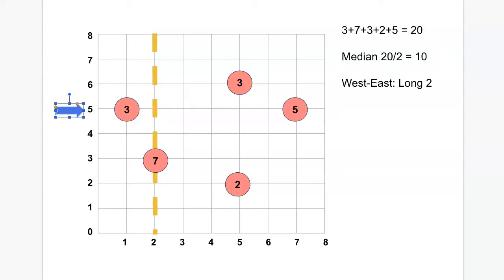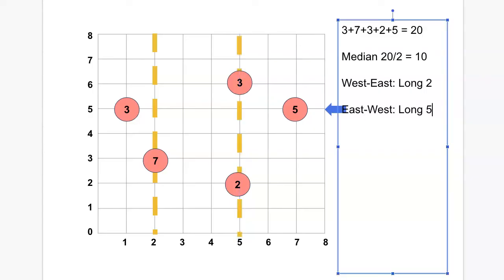Now I'll do the next pass going from east to west, and again I'm going to keep going from east to west until I reach my median. So moving over to longitude 7 I've got 5, longitude 6 there's nothing there, longitude 5 I've got another 2 plus 3 which is 5, and the original 5 on longitude 7 gives me 10, so I've reached my median there. So I'm going to mark that spot and take note of it again. So that's my west east and my east west pass.